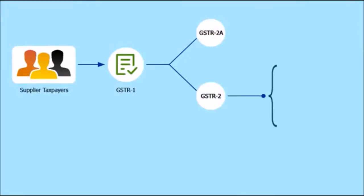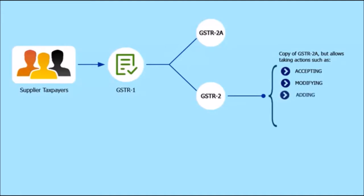GSTR2 is also a copy of GSTR2A except that it allows the receiver to take actions on the submitted invoices, which includes accepting, modifying, adding, or rejecting the invoice details uploaded by suppliers, or keeping the invoices pending for action. The receiver taxpayers can view the invoice data in GSTR2 almost real-time upon upload, even before the due date of filing GSTR1 by the supplier taxpayer.